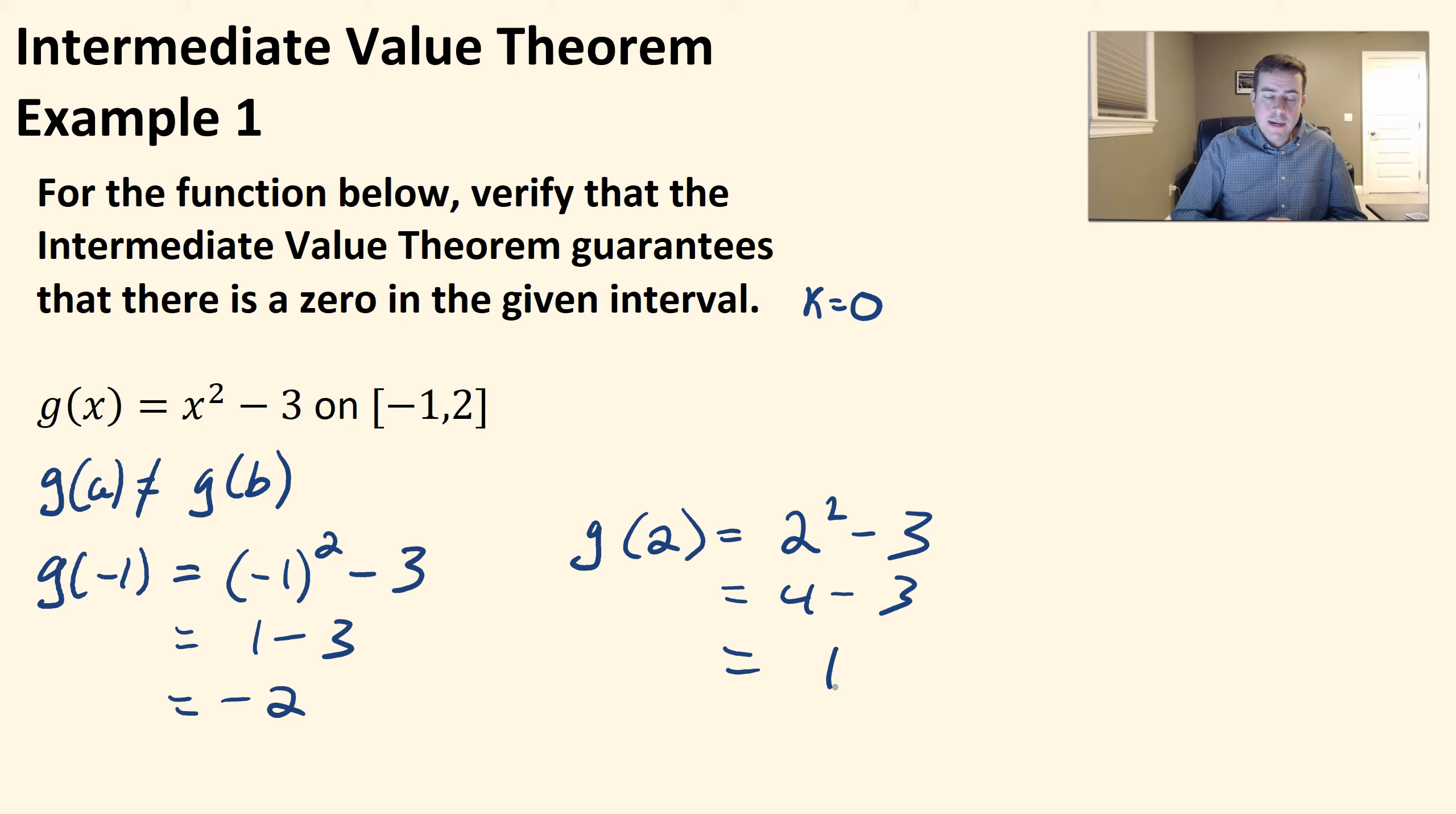So by the intermediate value theorem, there is going to be some value for c where f of c equals a k value that's between g of a and g of b.